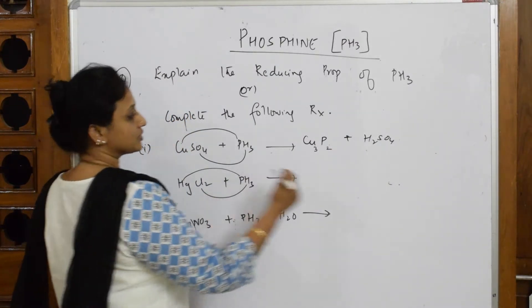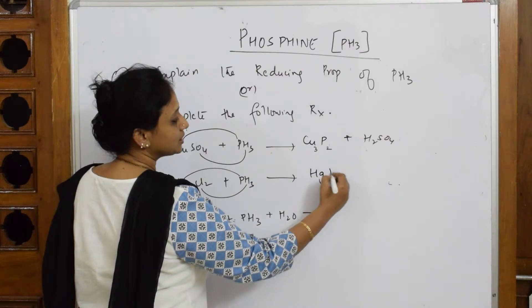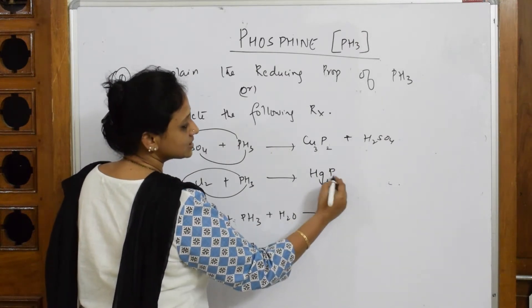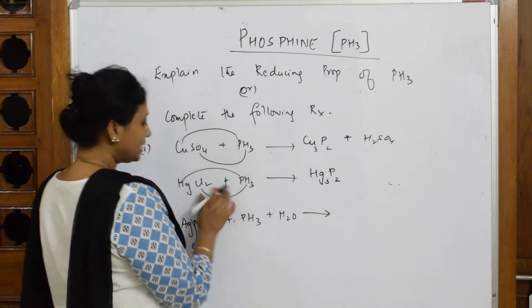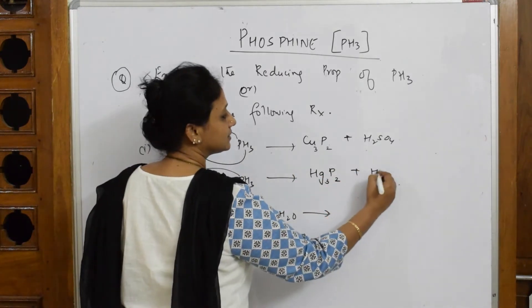Now, mercuric phosphide. Let us write HGP. Phosphorus valency is 3, mercuric valency is 2, and the corresponding HCl.